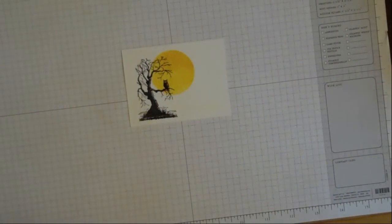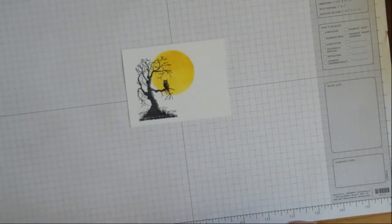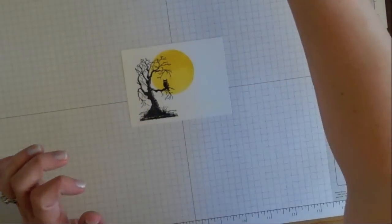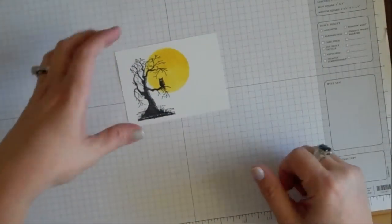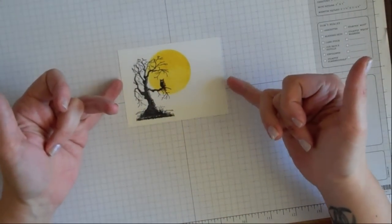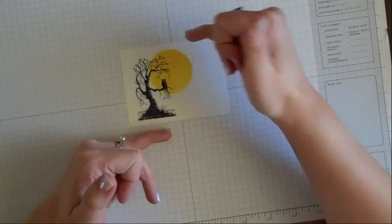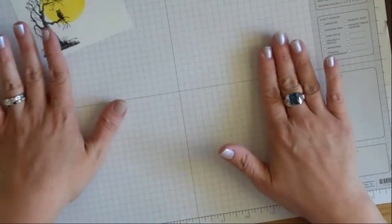Just going to close up your ink pad when you're done. That's going to be our main focal image on our card. This piece was cut at 4 wide by 3 high. Go ahead and set that aside.